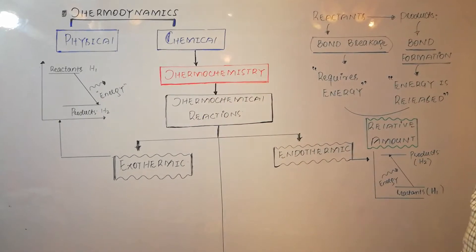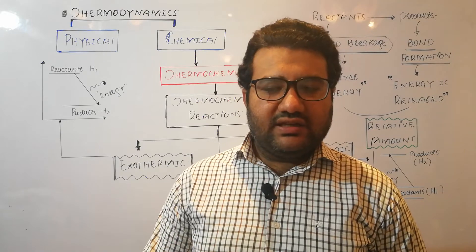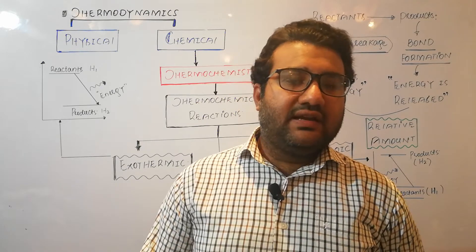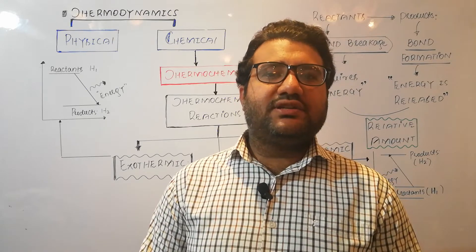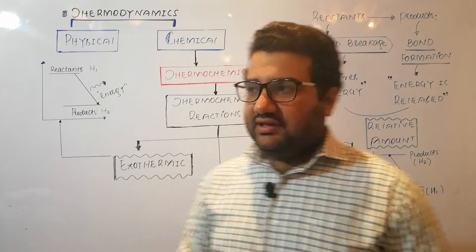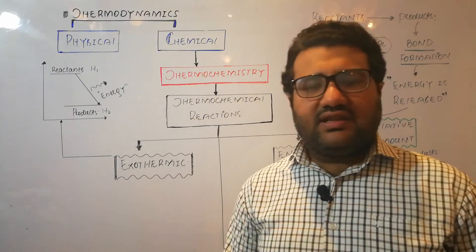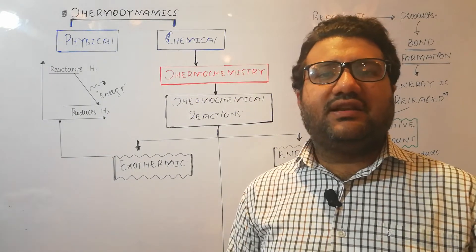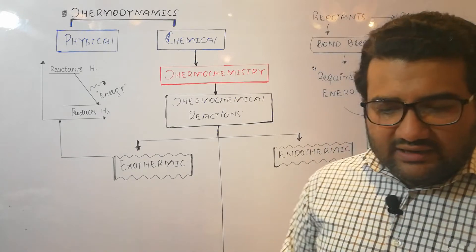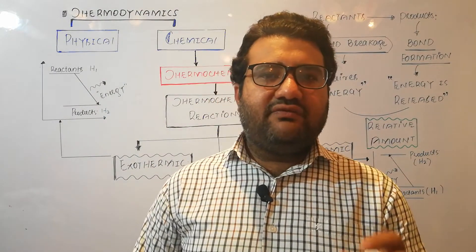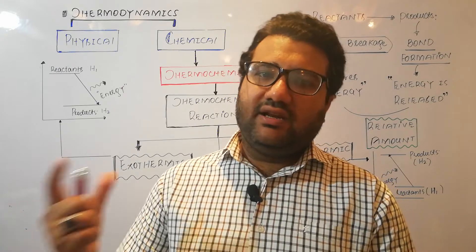The subject matter of thermochemistry is thermochemical reactions. Thermochemical reactions are those balanced chemical equations in which reactants are changed into products, and at the end of the reaction a delta H value is given. So thermochemical reactions are basically simple chemical reactions, but our main focus is how much heat is evolved or absorbed. Whenever you see a thermochemical reaction, the value of delta H will be given with it.